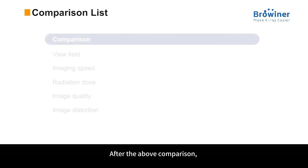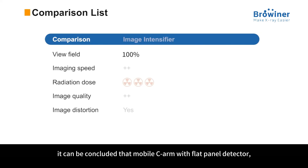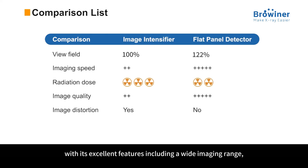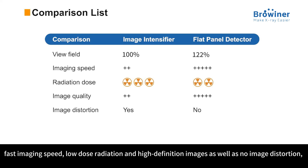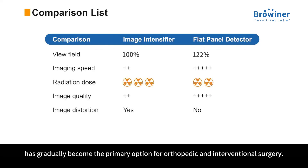After the above comparison, it can be concluded that the mobile C-arm with flat panel detector — with its excellent features including a wide imaging range, fast imaging speed, low-dose radiation, high-definition images, and no image distortion — has gradually become the primary option for orthopedic and interventional surgery.